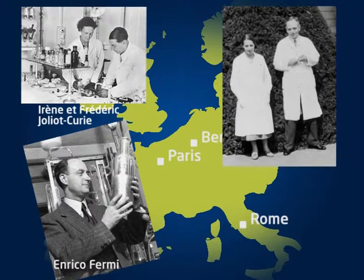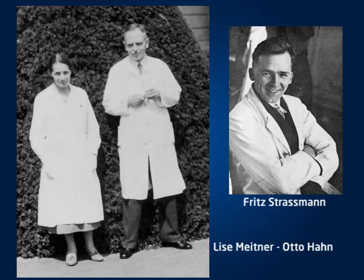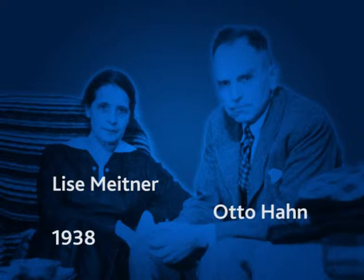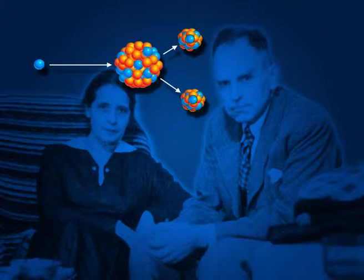As soon as they heard of Fermi's results, the German physicists Otto Hahn and Fritz Strassmann and their Austrian colleague Lise Meitner put all their combined efforts into investigating uranium. It was Lise Meitner who would take the great leap of imagination in December 1938. She realized that uranium broke into two fragments. This was the fission of the nucleus.